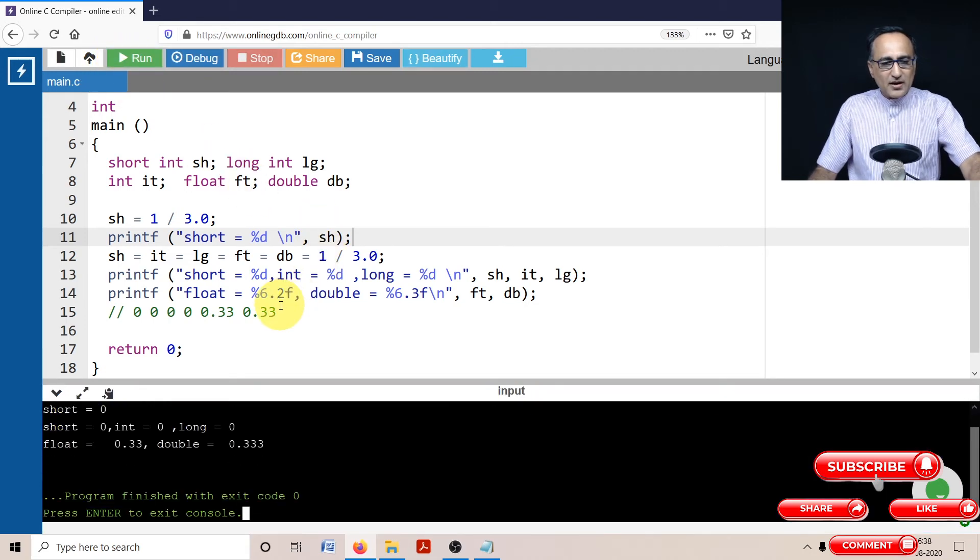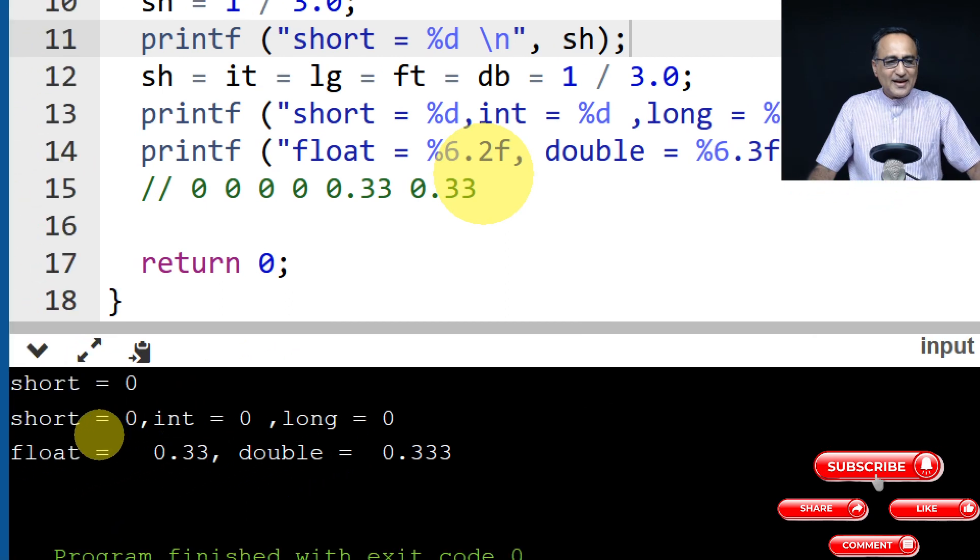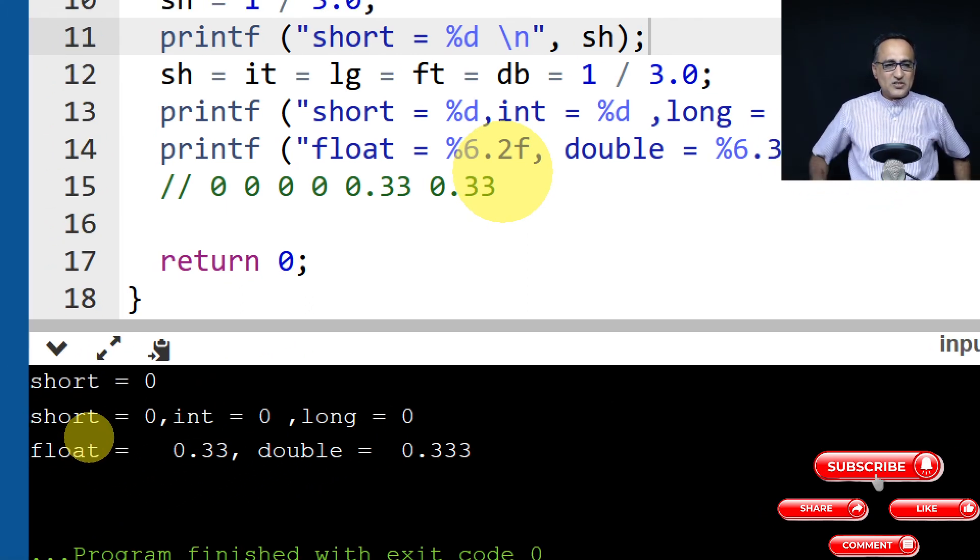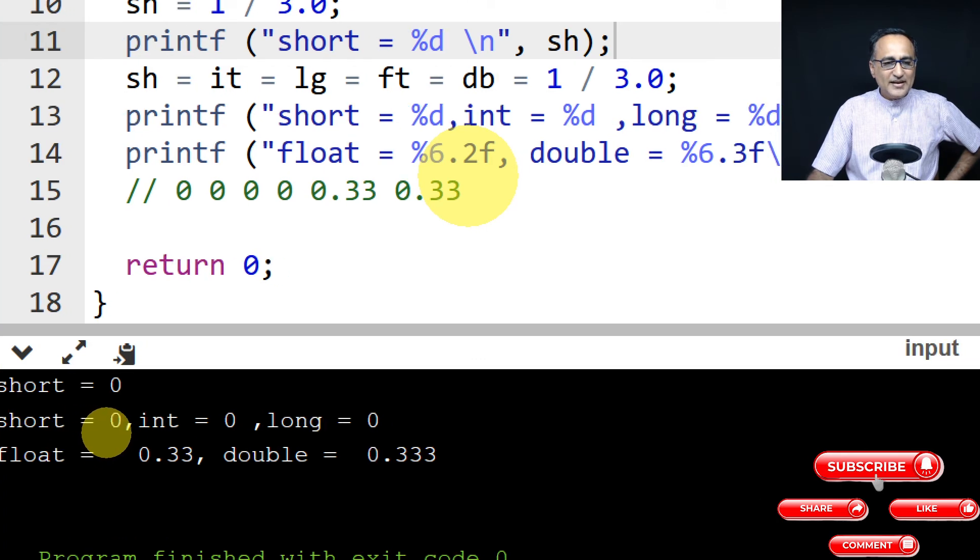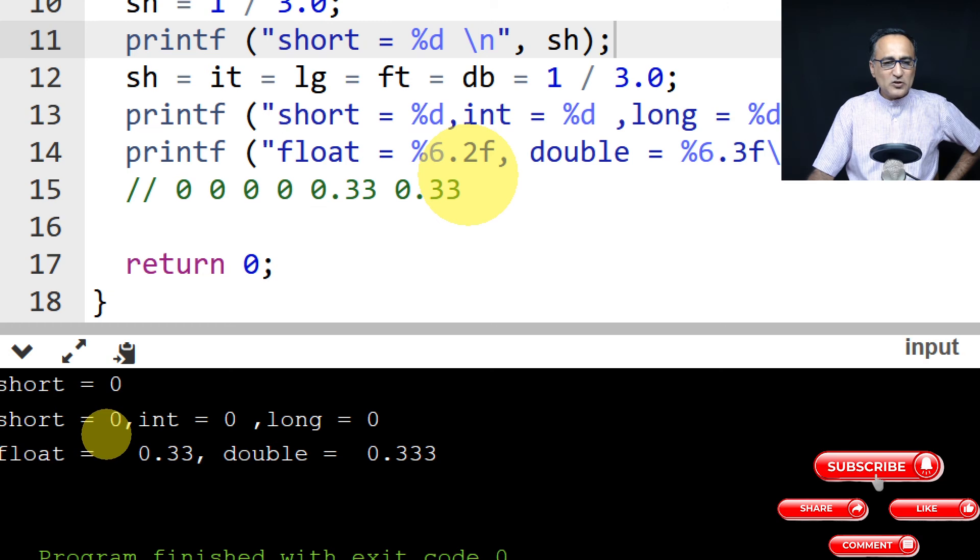When I run this, you'll notice that the value of short is 0. Then in the next step, when I did the division of one by three, short was zero, int zero, long is zero, float is 0.33, and double is 0.33.